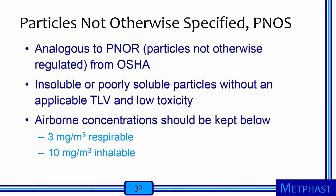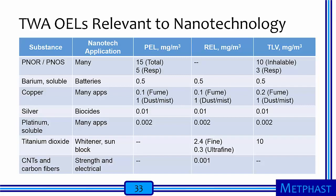ACGIH has TLVs for particles not otherwise specified, called PNOS — analogous to PELs for PNOR from OSHA. These apply to insoluble or poorly soluble particles without an applicable TLV and low toxicity. The TLVs are 3 mg per m³ for respirable and 10 mg per m³ for inhalable particles. Here I've added a new column with the TLV from ACGIH alongside the PEL from OSHA and REL from NIOSH. In many cases you'll find all these values are the same, and in other situations there are differences.